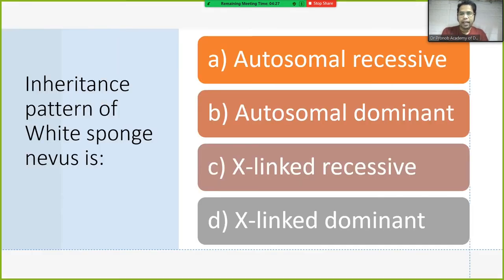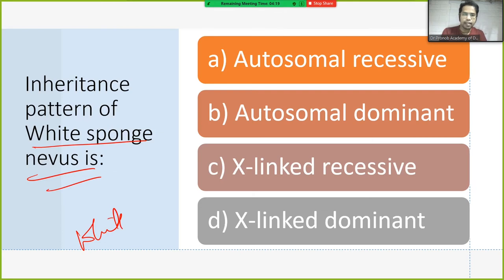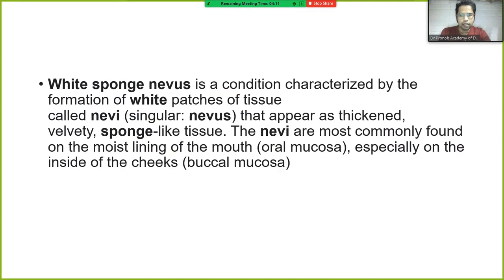The inheritance pattern of white sponge nevus is autosomal dominant. White sponge nevus presents as white patches of tissue and is inherited as an autosomal dominant disorder.